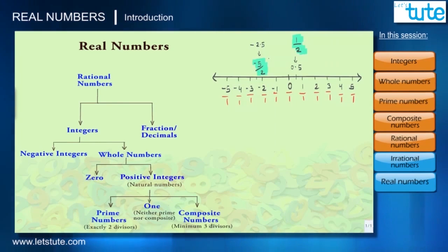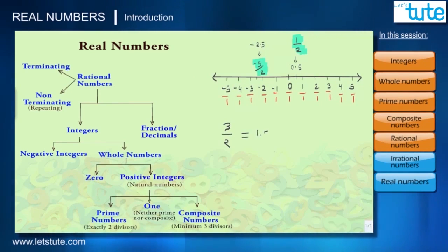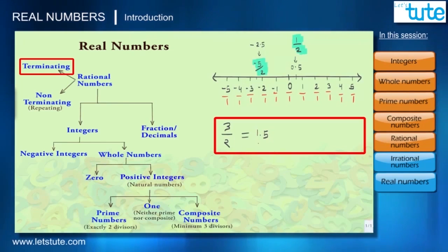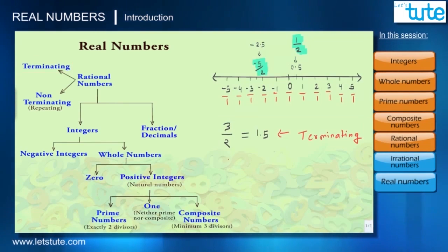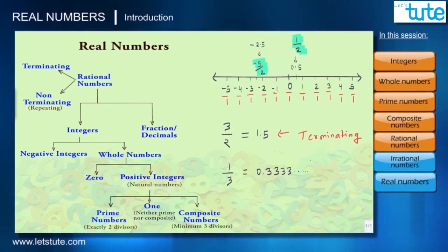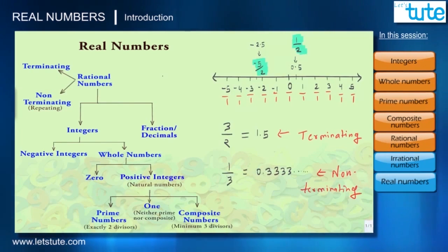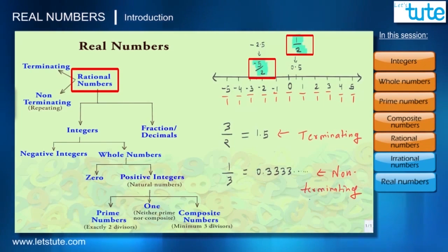The decimal form of a rational number can either be terminating or non-terminating. For example, 3/2 is a rational number and its decimal form is 1.5 — this terminates at 5, so it is called a terminating decimal. Whereas 1/3 is also a rational number and its decimal form is 0.333... going on forever with repetition of digit 3, so this is a non-terminating decimal form.